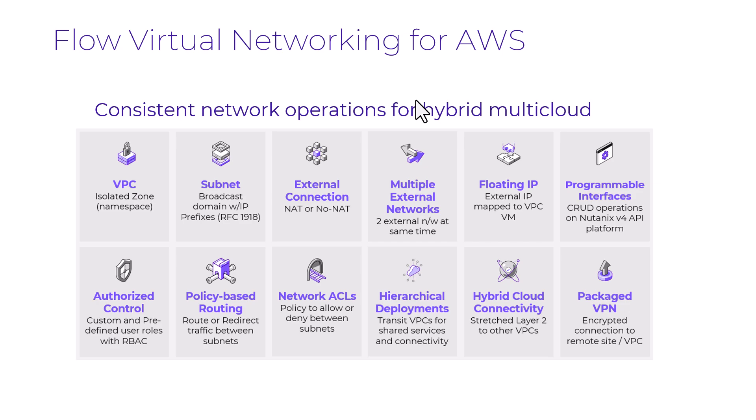Flow Virtual Networking for AWS was released in 6.8. This allows Nutanix customers to have consistent network operations for their hybrid multi-cloud, regardless of whether they're working in their private data center, deploying into their favorite hyperscaler, or even their favorite service provider. Flow Virtual Networking is jam-packed with features, and now you have a common API to orchestrate and automate across all of your environments.